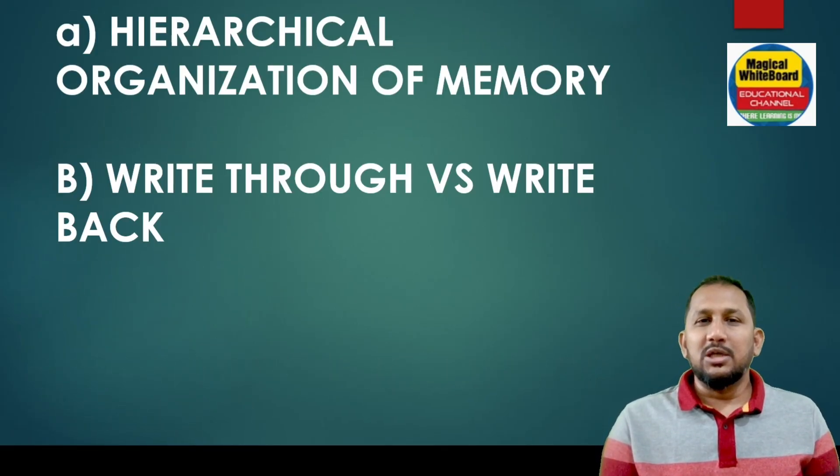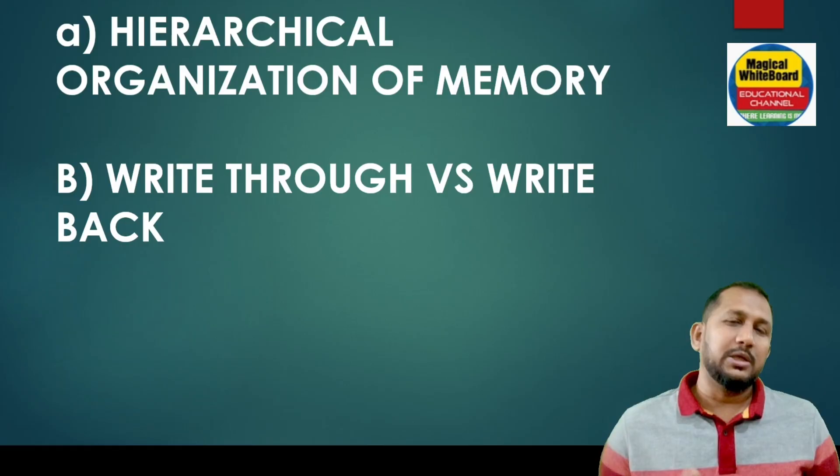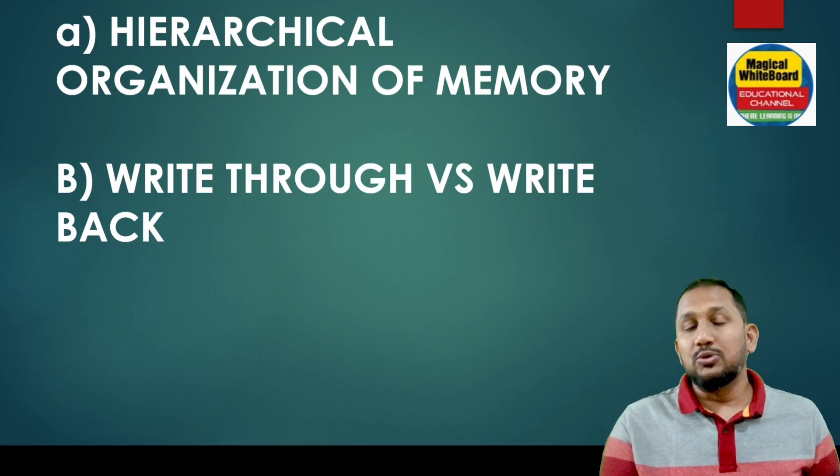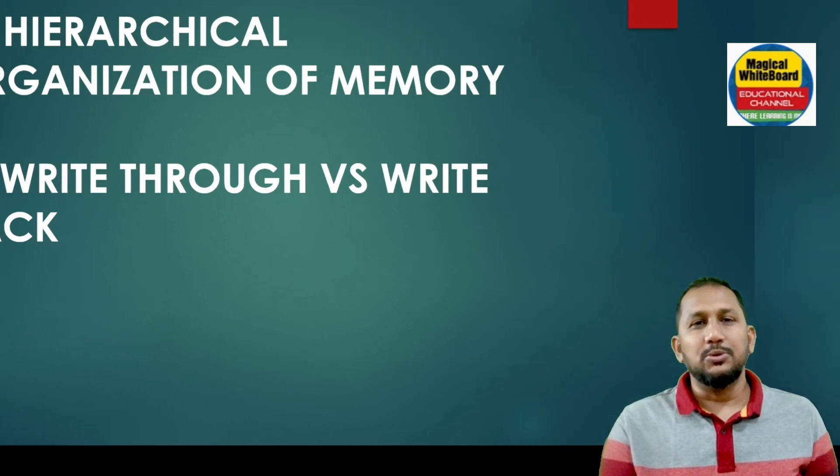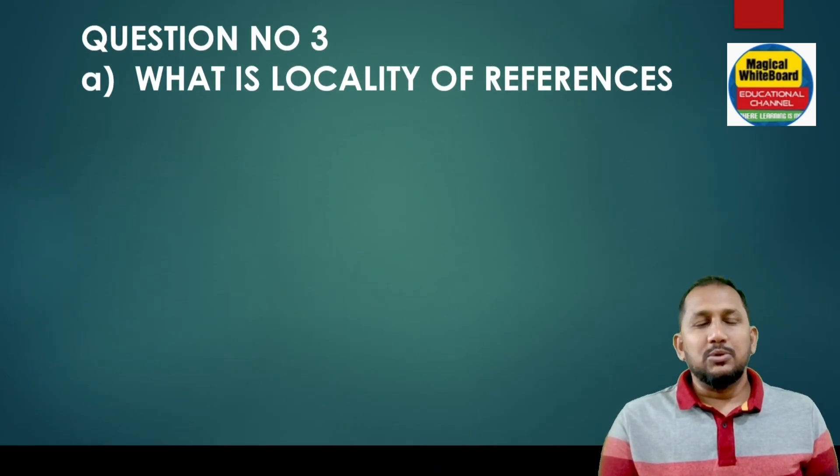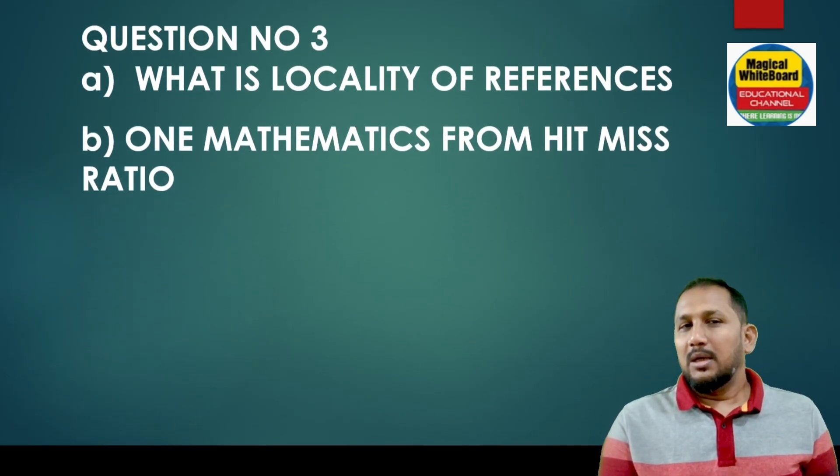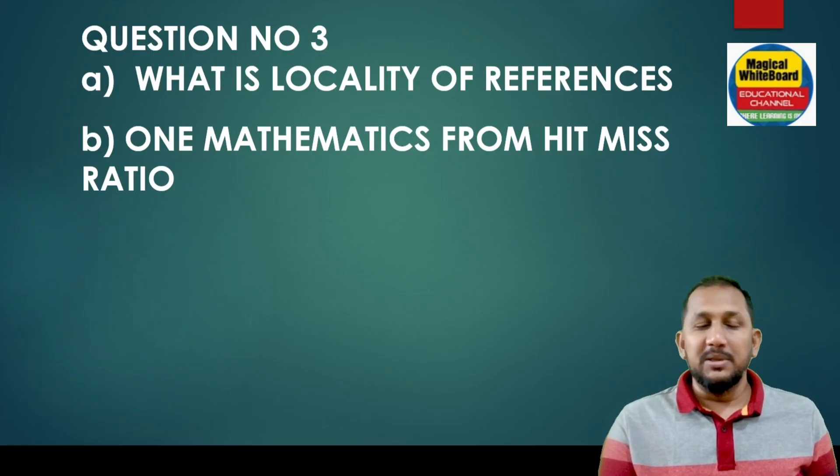Now question 2. What is locality of references in cache memory? Write through and write back cache memory. Question number 3, what is locality of references in cache memory? One method loop problem from hit and miss issue.